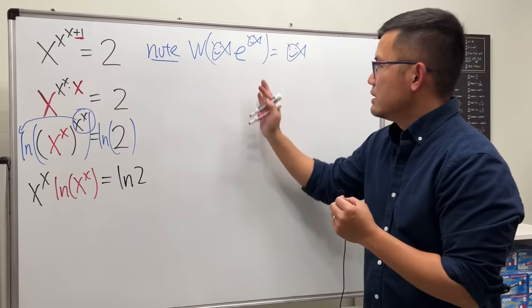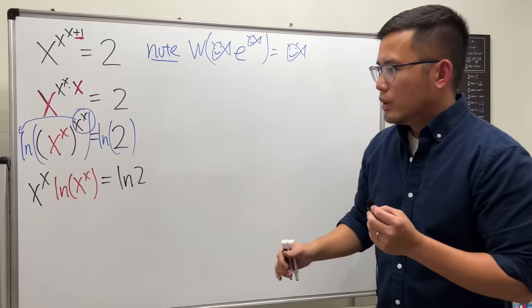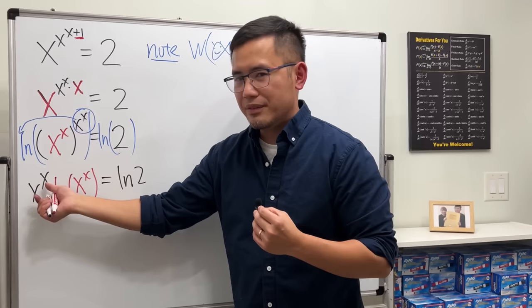Now, let's see, we really want to have a fish, so what can we do? Well, notice that we have ln right here already, and this part right here does not have the ln. Let's utilize the ln and call the e. Check this out.